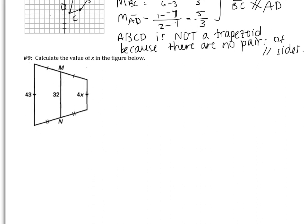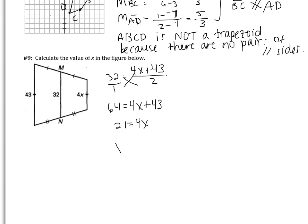One more example: calculate the value of X using a trapezoid mid-segment. M and N are midpoints, so the mid-segment of 32 equals the average of the bases: (4X plus 43) over 2. Putting 32 over 1 to do cross products gives 64 equals 4X plus 43. Subtracting 43 gives 21 equals 4X, so X equals 21/4. Please bring any questions about properties, the mid-segment, or kites to class tomorrow. Thank you and see you then.